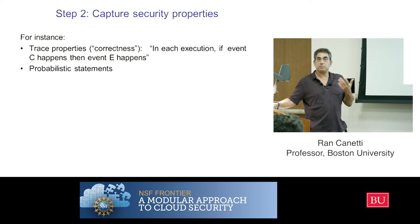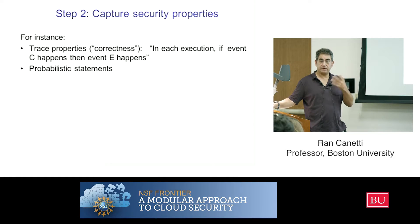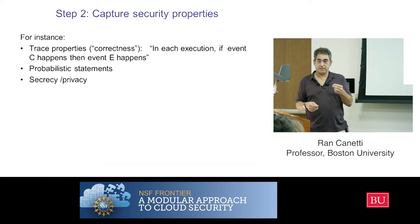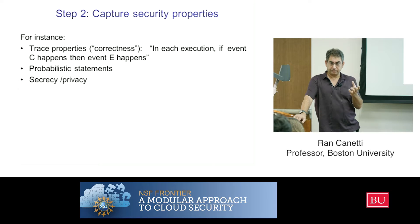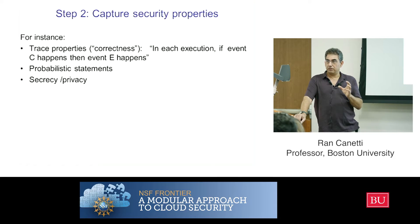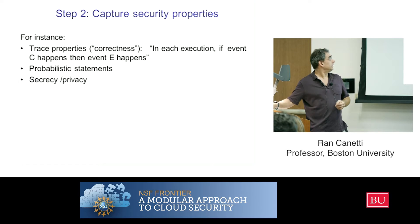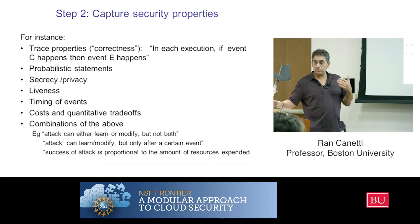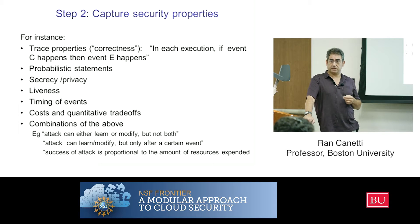Then there are probabilistic statements — that something happens with high or low probability — which you cannot verify by looking at a single trace; you have to look at the system overall. And then there are issues like secrecy and privacy, which are an odd animal: they're not a property of any particular trace, and it's not even clear a priori what they mean. Cryptographically they have one meaning; information-theoretically, a different meaning. We also want to capture liveness, timing of events, things happening before others, and cost and quantitative trade-offs — as well as combinations of all these things.